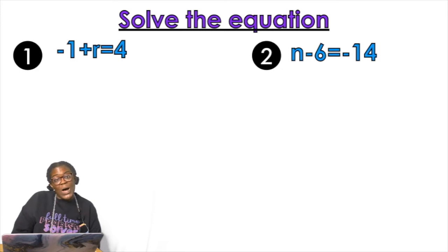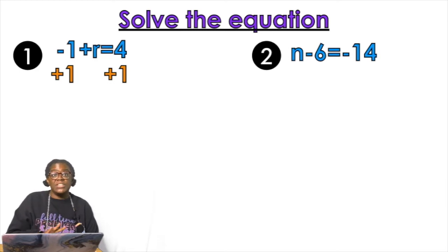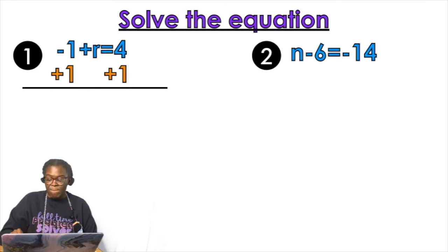Well it's being subtracted so how do I get rid of subtraction? Add. If I do it on one side of an equation I have to do it on the other to keep it balanced. So I'm going to get r equals five.